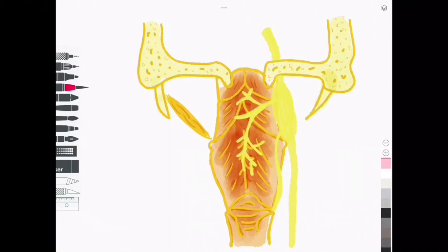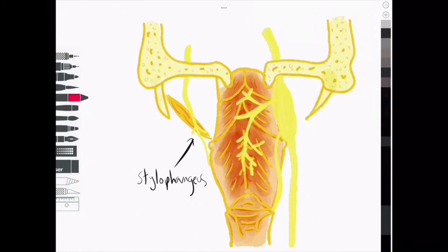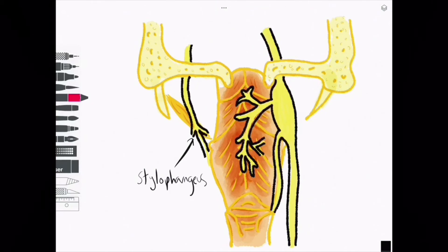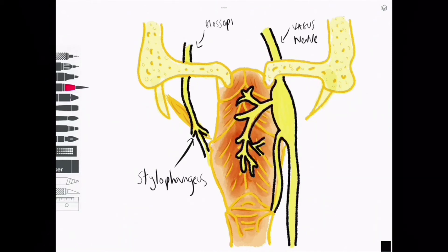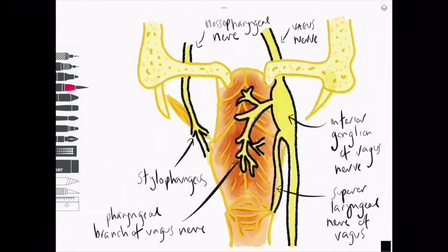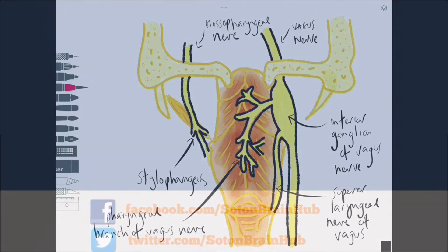If we think about it, it's logical that stylopharyngeus, which is the odd one out here, would have a different nerve supply. So it is easy to remember it is innervated by the glossopharyngeal nerve. Here we can see the superior laryngeal branch of the vagus, which will descend, branching into the external and internal laryngeal nerves.